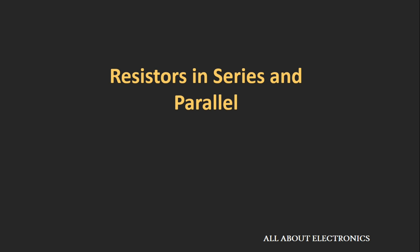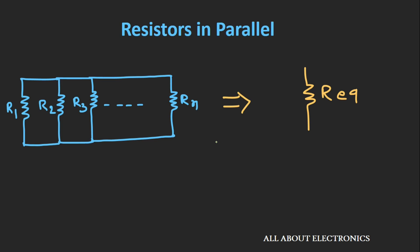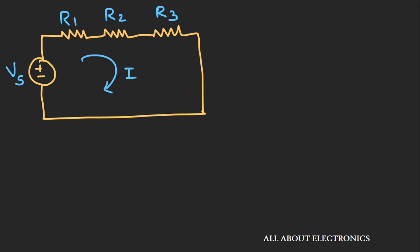Hey friends, welcome to the YouTube channel all about electronics. Today we will see how to find an equivalent resistance when a bunch of resistors are connected either in series or in parallel combination. We will find an equivalent resistance when N number of resistors are connected in series, and likewise when N number of resistors are connected in parallel combination. Let's start with the resistors connected in series combination.